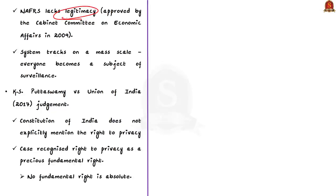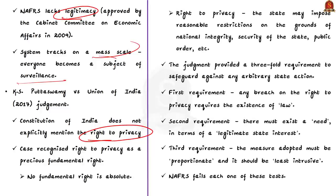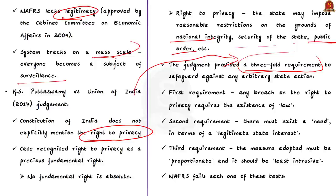NAFRS also lacks legitimacy — it was approved by the Cabinet Committee on Economic Affairs in 2009 and does not come from a statutory enactment. It can also be used for mass-scale surveillance by the government, which can violate the right to privacy. According to the case K.S. Puttaswamy versus Union of India, the right to privacy is a fundamental right, as held in 2017. The government can place restrictions on the right to privacy only on reasonable grounds such as national integrity, security of the state, and public order.